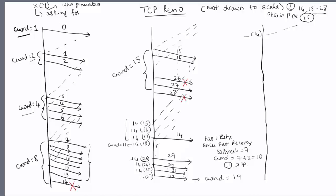After this point there are no more acknowledgements coming from before — only the acknowledgement pending for 14. That ACK arrives and asks for 26, because 26 is lost. At this point you exit fast recovery and set CWND equal to 7, the ssthresh value stored earlier. From this point on you should be doing congestion avoidance. However, the next ACK still asks for 26, generated by packet 29, so it is a duplicate ACK and you cannot increase CWND.